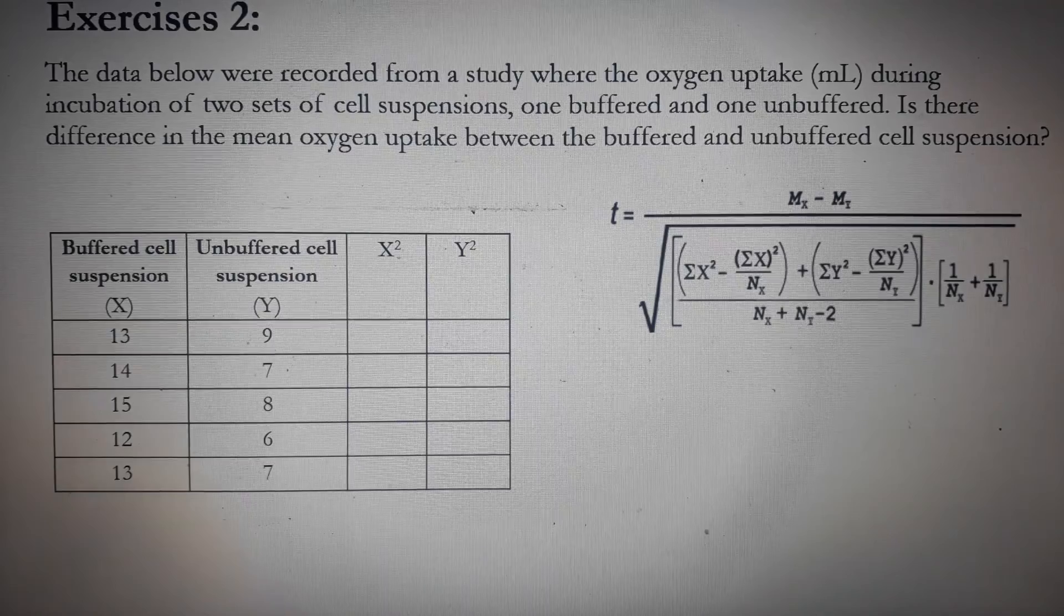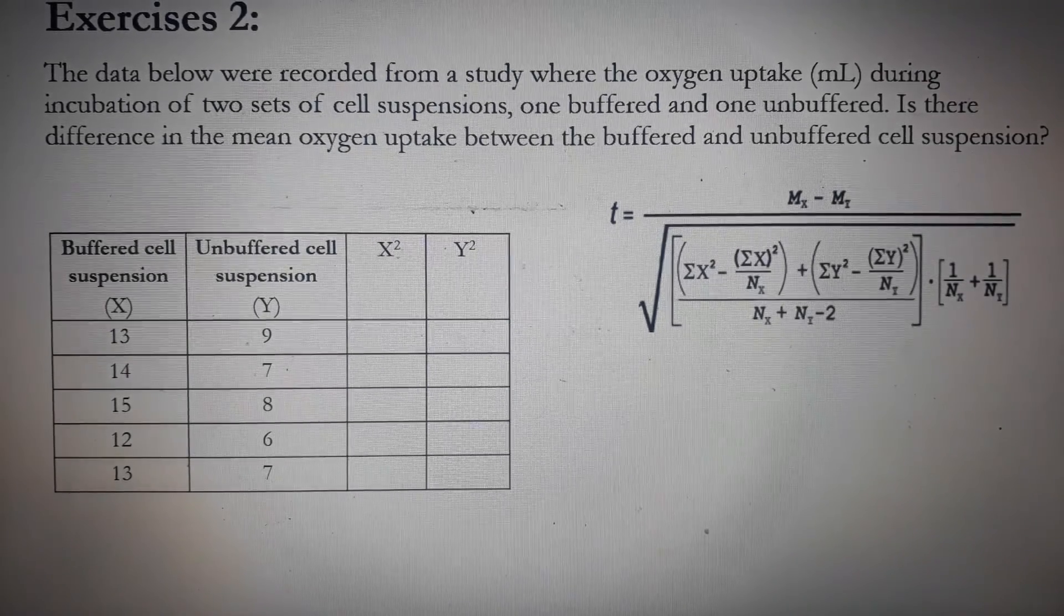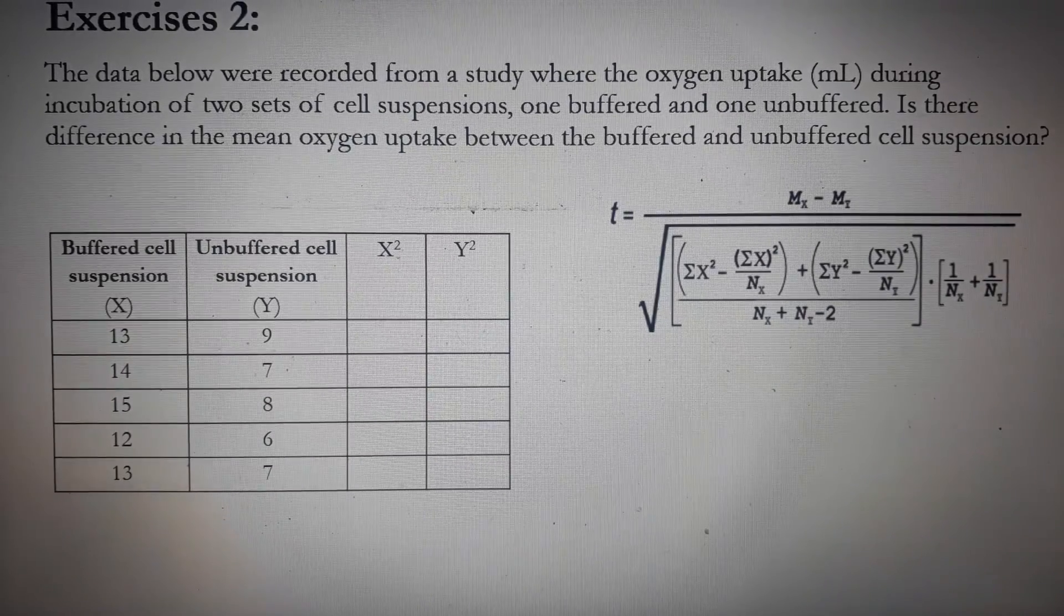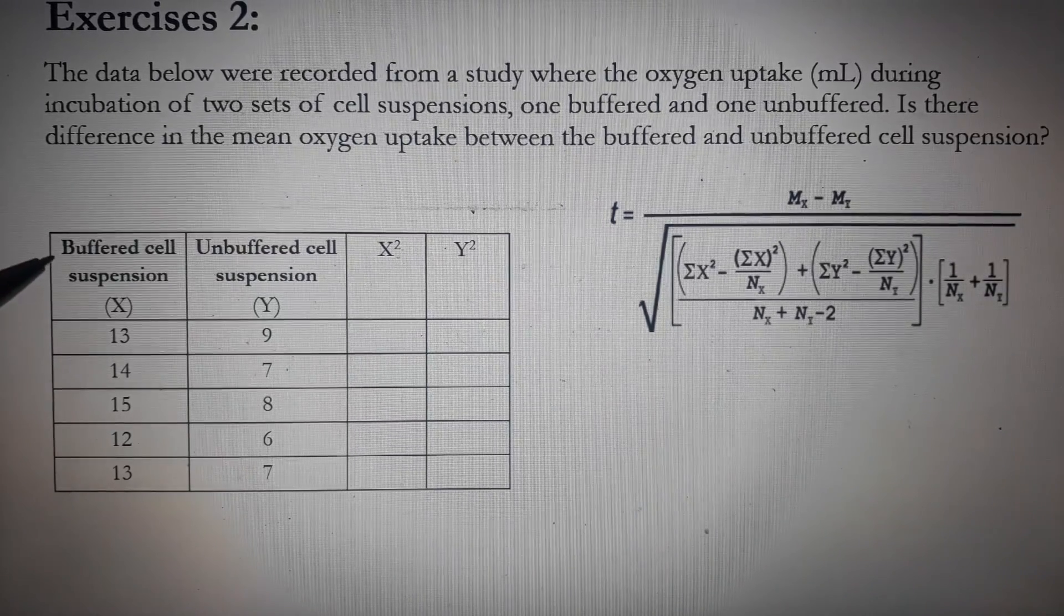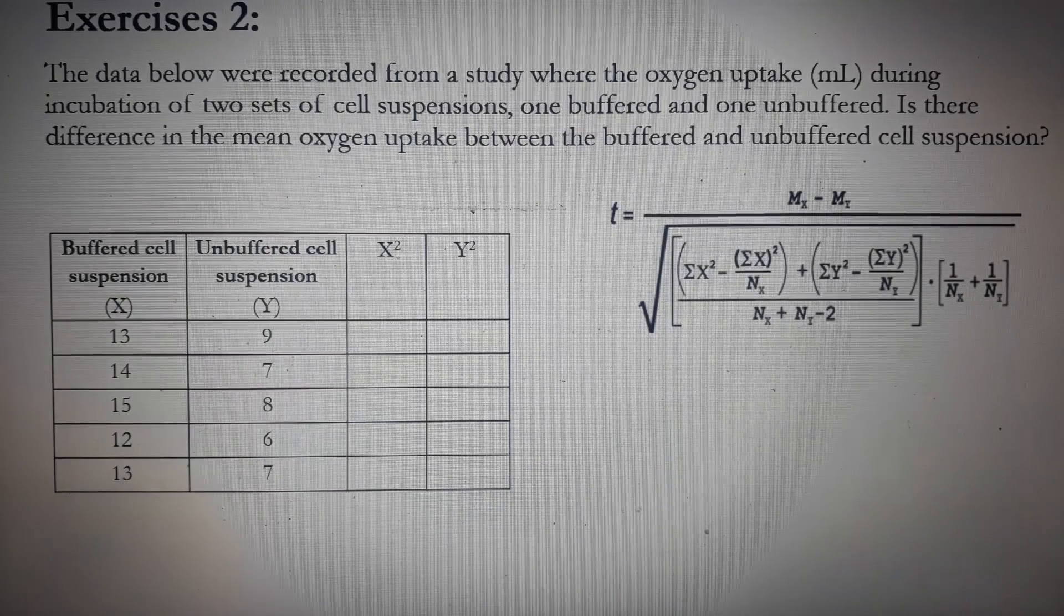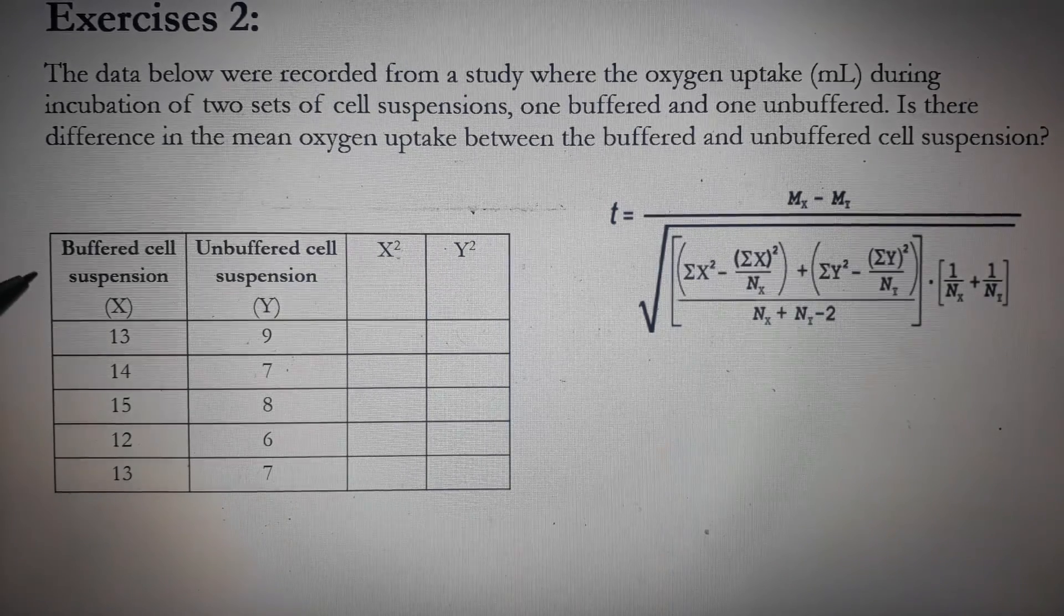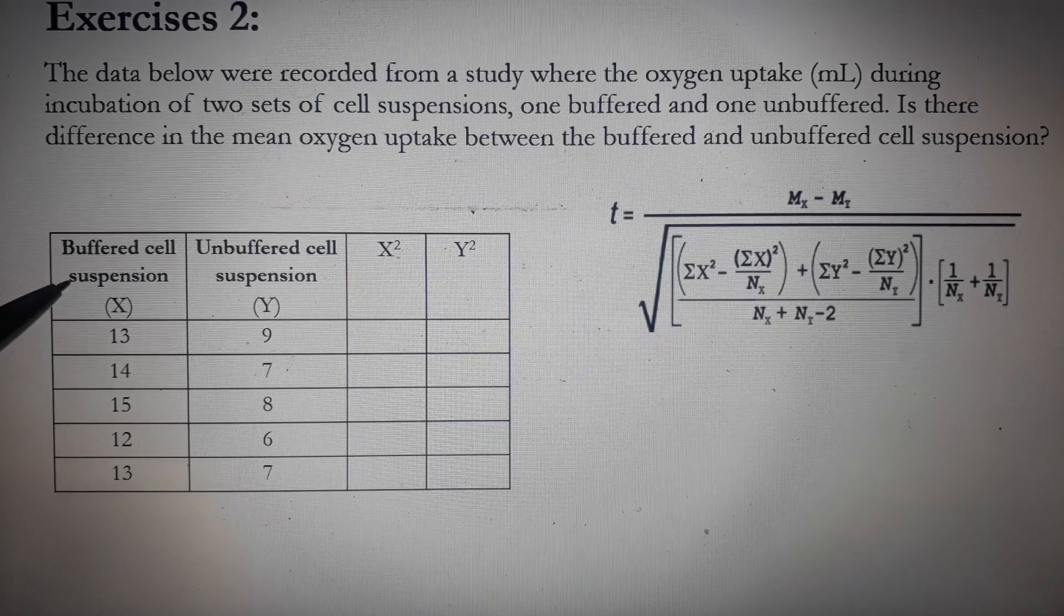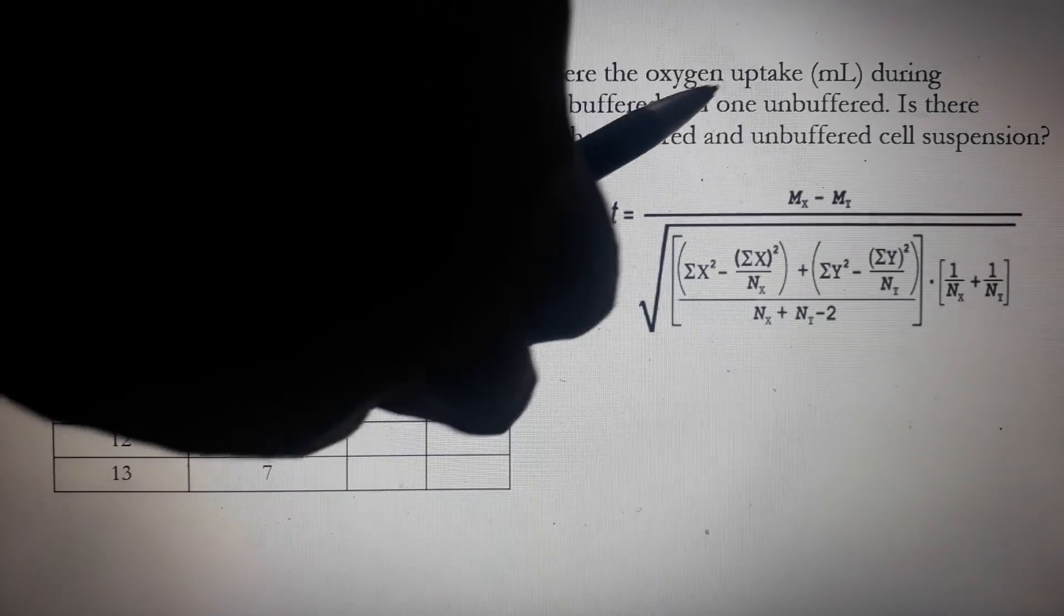So the formula that we will be using is the long formula. But first we need to complete the table. So the first column is the data for the first group or set up because obviously it's a pure science experimental research. So the first group or first set up is the buffered cell suspension. It corresponds to the x group and these are the oxygen uptake.